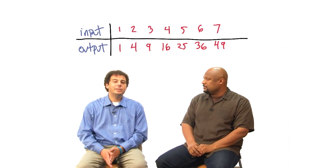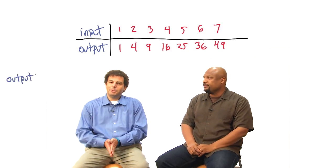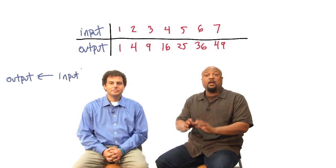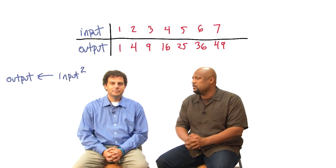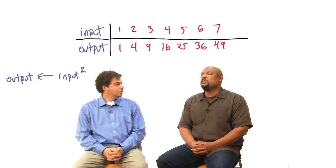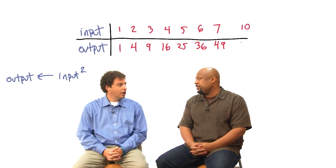This is a very hip data set. What's the function? It's hip to be squared. Exactly. So if you believe that's true, tell me: if the input is ten, what's the output? A hundred.